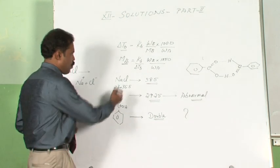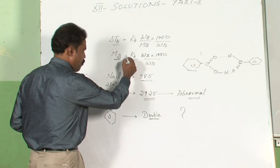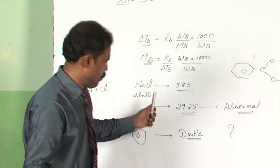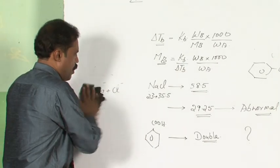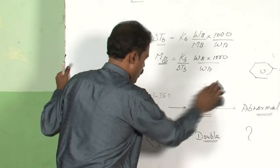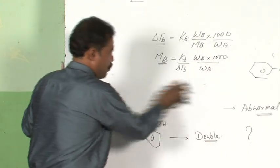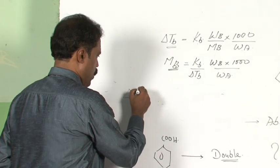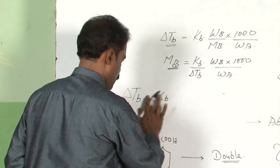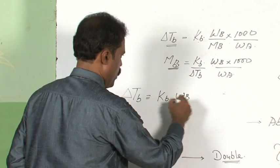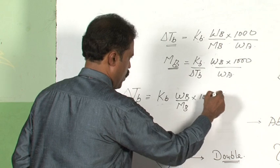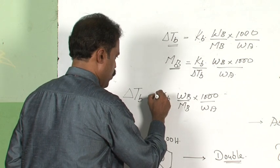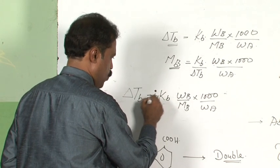The next obvious question is: how do we correct this abnormality? A scientist called Van't Hoff studied this particular issue and came out with a solution — a correction factor called the Van't Hoff factor. The expression we have derived now has to be modified: delta Tb = Kb × (Wb / Mb) × (1000 / Wa), multiplied by a correction factor i, which is called the Van't Hoff factor.